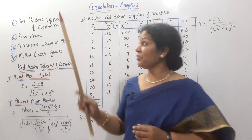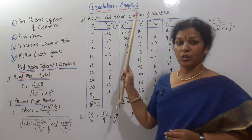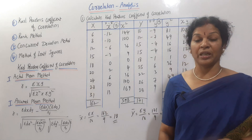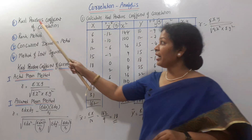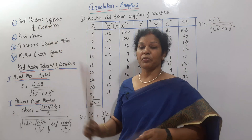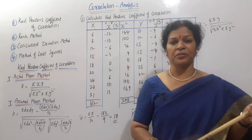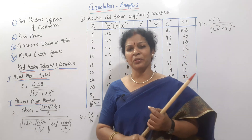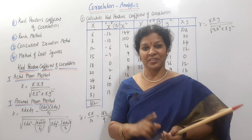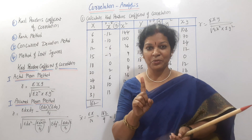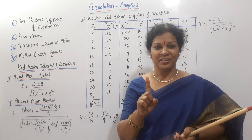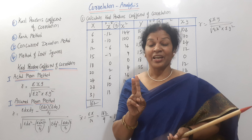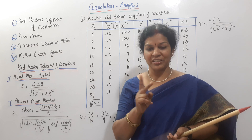Correlation is one of the most important topics. We use Carl Pearson's coefficient of correlation. Carl Pearson is also associated with standard deviation and Carl Pearson's coefficient of skewness, which we covered last class.